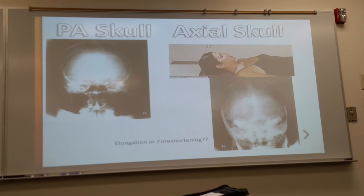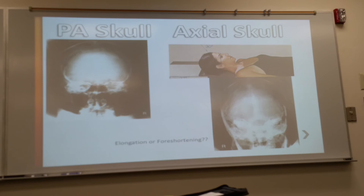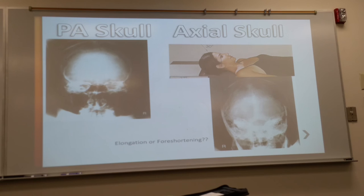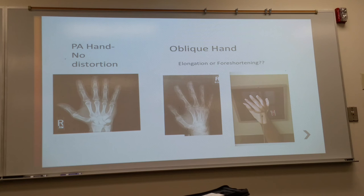So here are the petrous ridges right here. So you can kind of tell about the distortion how, instead of being parallel, like here, they're angled. But again, we're seeing the foramen magnum, the base of the skull. So we are looking literally at all the occipital bone. So my question is elongation or foreshortening? Elongation. Correct.